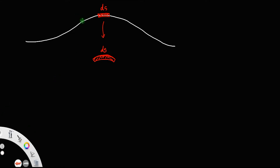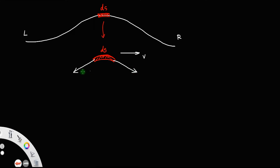Let the wave be travelling from left to right. Let v be the velocity of the wave. Now for this portion, there is always a tension acting through the string, and at the ends it will be along the length. Let us say T for tension.